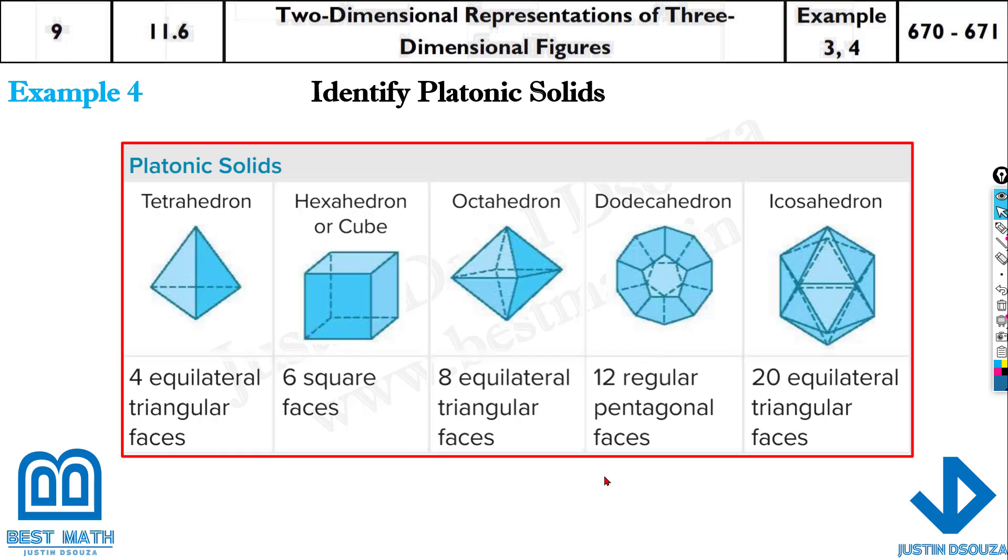So now about platonic solids. These are some shapes you need to remember. These are the names of these platonic solids: tetrahedron, hexahedron, octahedron, dodecahedron, icosahedron. It all depends on the number of surfaces. You can see cube, it has six sides.